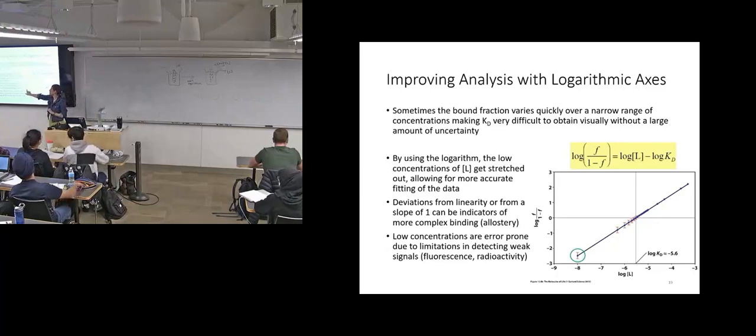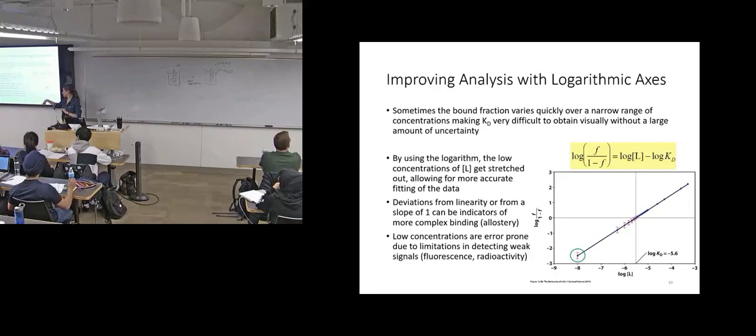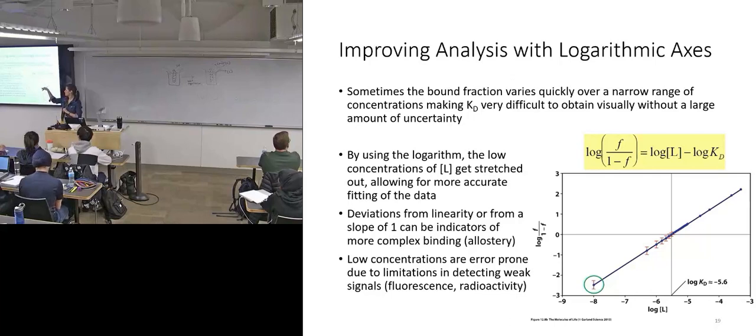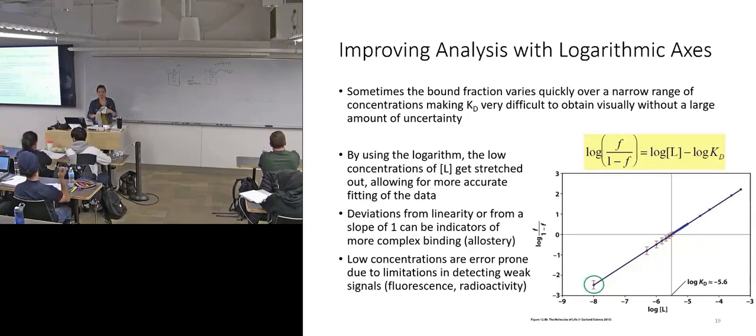So we now have a plot, we're plotting, here's our Y axis is the log of our fractional occupancy over 1 minus our fractional occupancy. The log of our X axis is the log of our free ligand concentration. So when this line crosses the 0 point is where our Kd concentration is. So if you see this plot, now you hopefully understand the manipulations that were back to the data and you can now read where Kd is as opposed to when you're looking at the hyperbolic plot.